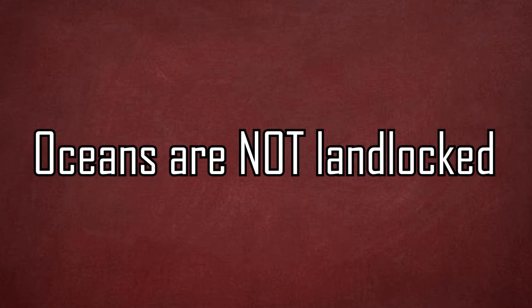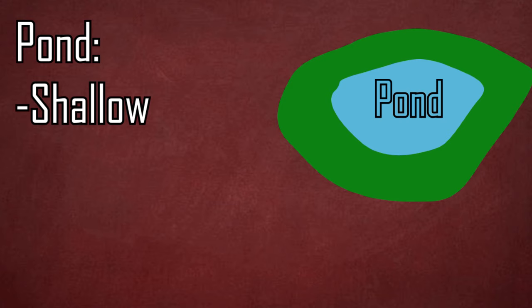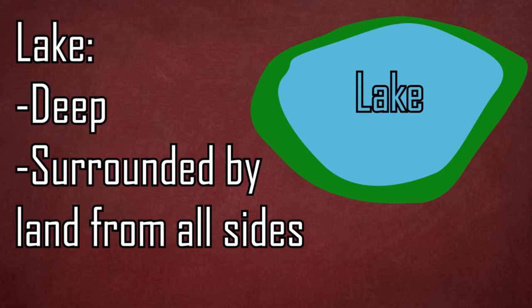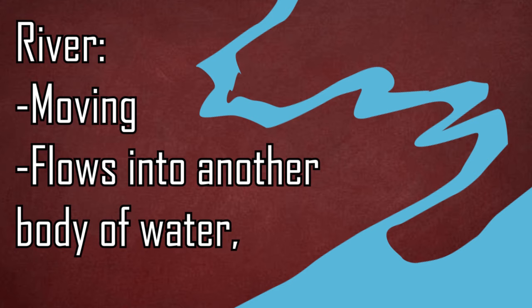So, to summarize everything, a pond is a shallow body of water that is surrounded by land from all sides. A lake is a deep body of water that is surrounded by land from all sides. A river is a moving body of water that flows into another body of water, such as a sea or an ocean.